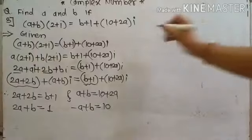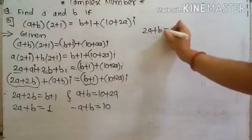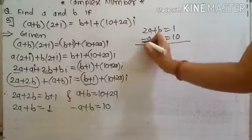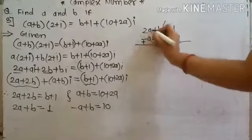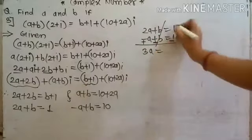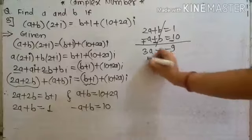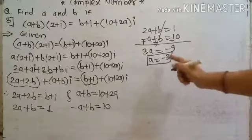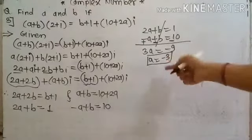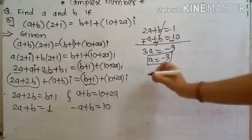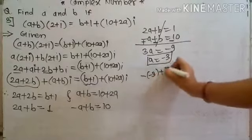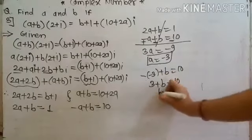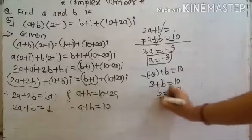We now have: 2a plus b is equal to 1, and minus a plus b is equal to 10. Taking the subtraction of these two equations, the b terms cancel. We get 2a plus a is 3a, and 1 minus 10 is minus 9, so a is equal to minus 3. Substituting a equal to minus 3 into the second equation: minus of minus 3 plus b is equal to 10, so 3 plus b is equal to 10, therefore b is equal to 7.